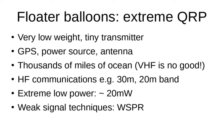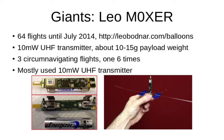We all stand on the shoulders of giants. In this case I've been following the flights of Leo M0XER, who flew 64 balloon flights up until July 2014, typically using UHF transmitters with a weight of about 10 to 15 grams. He used sometimes solar panels and in some cases a fixed battery. Typically only about 10 milliwatts transmitter power. In the end he had three flights which circumnavigated the world, and one of those went around six times.